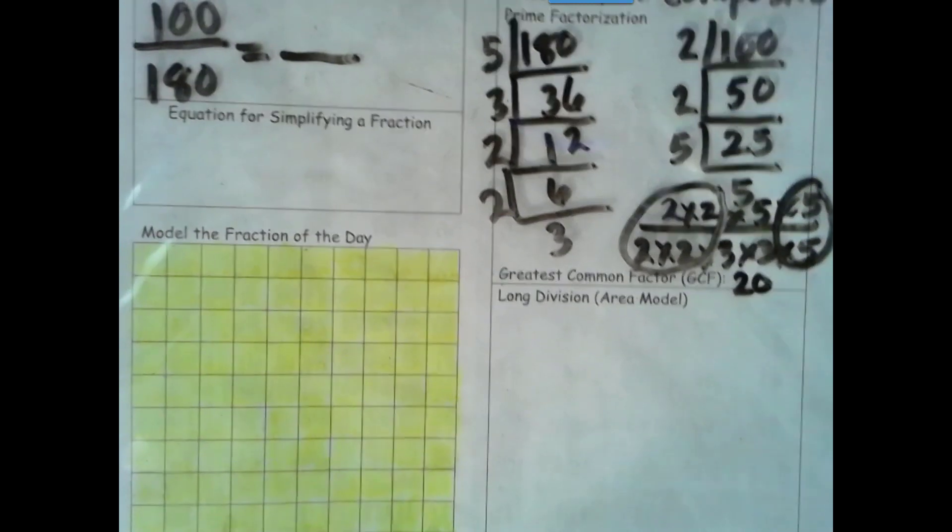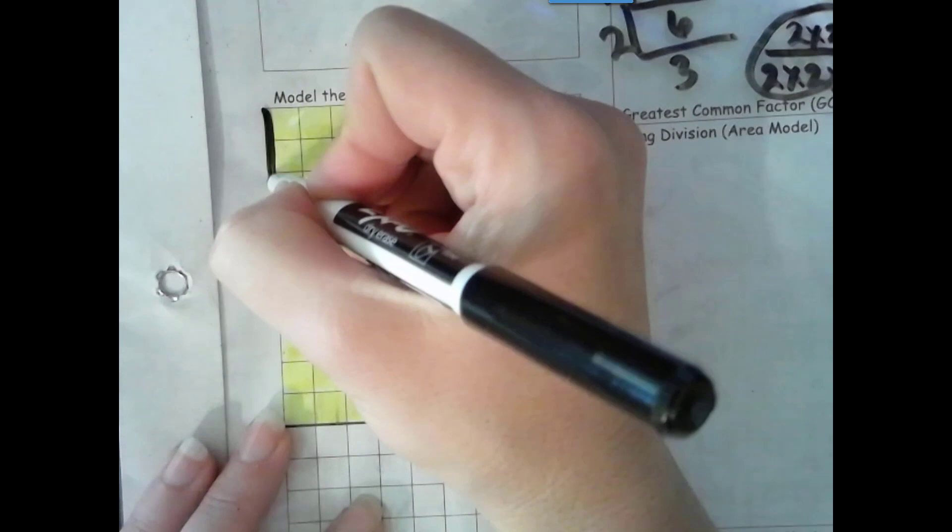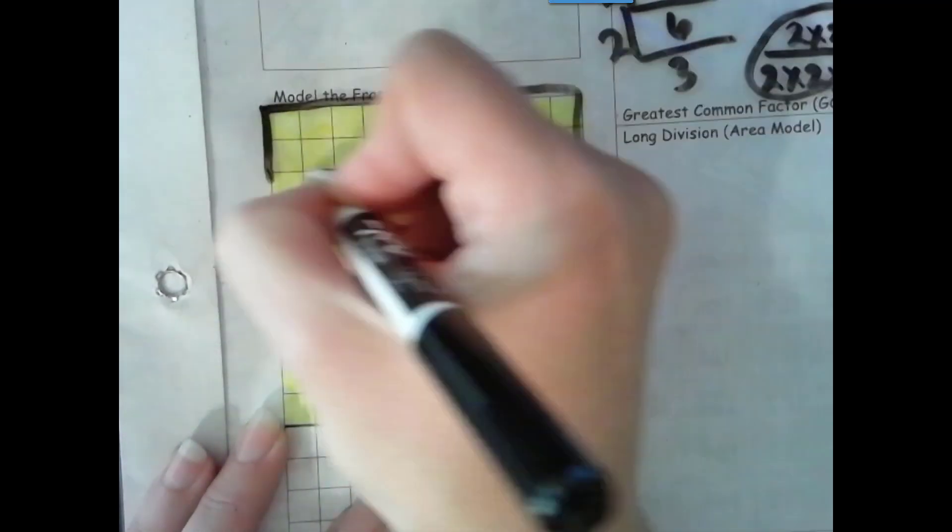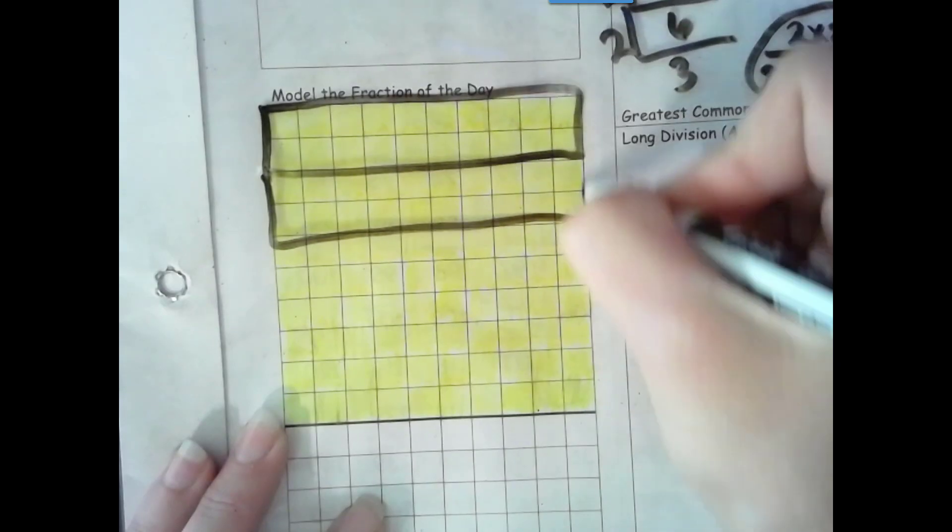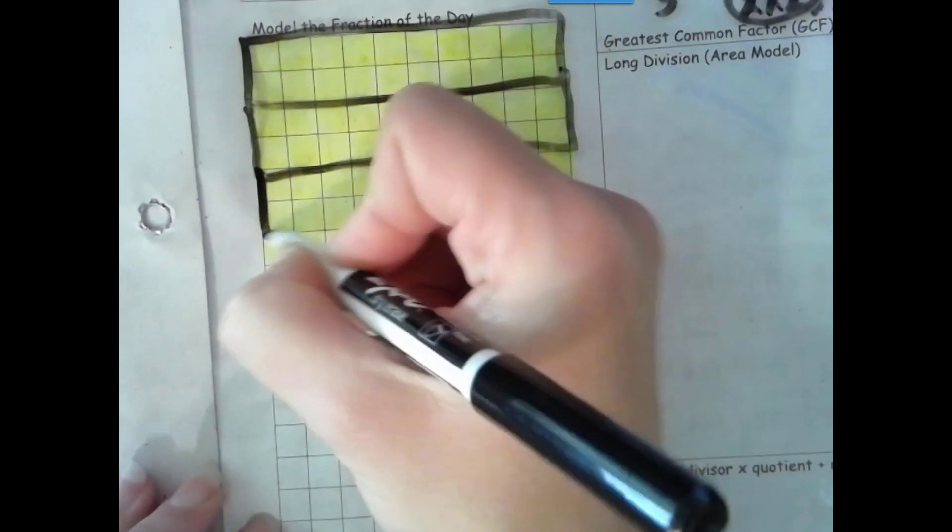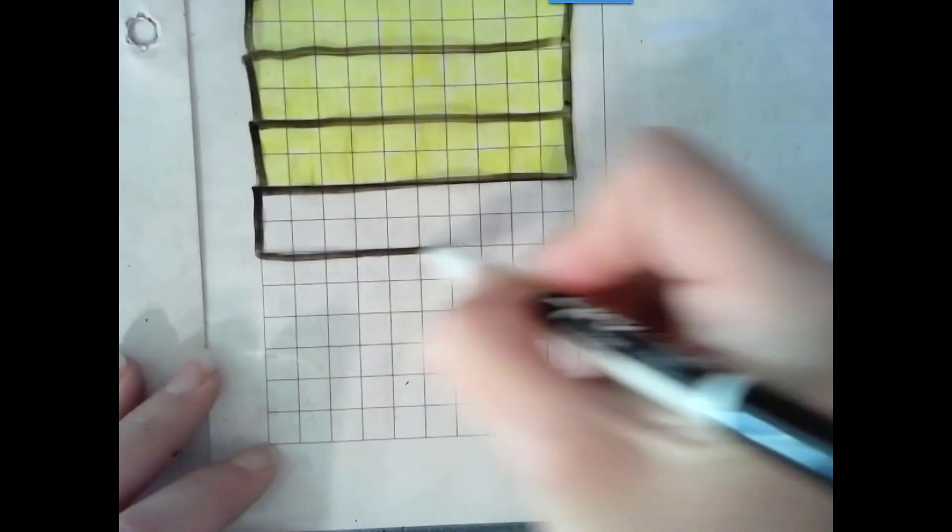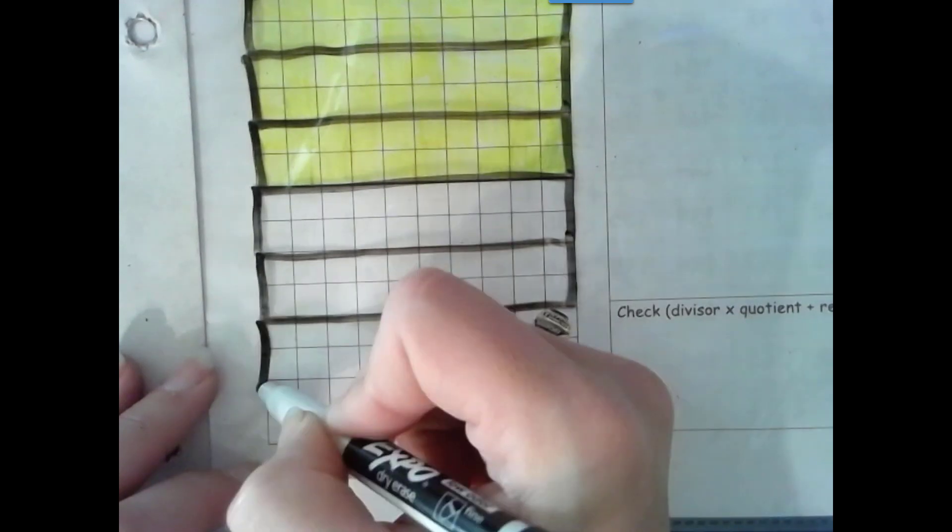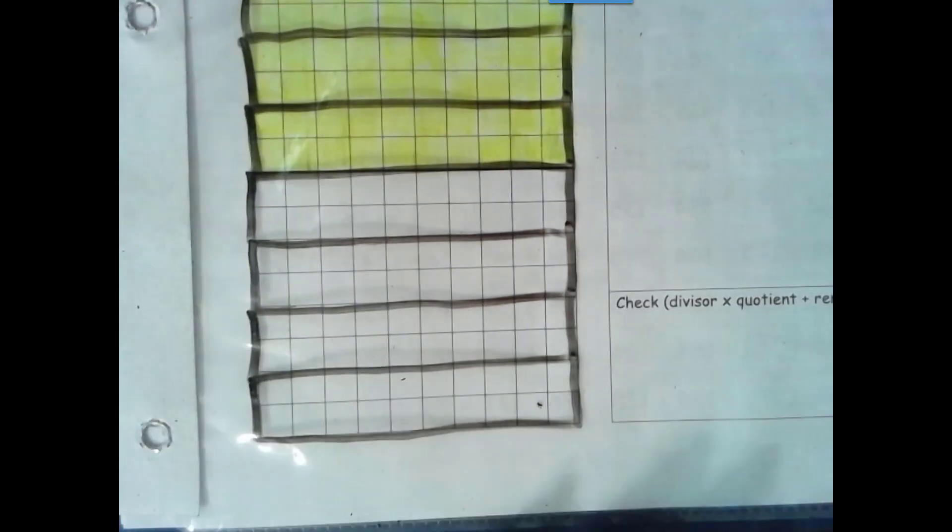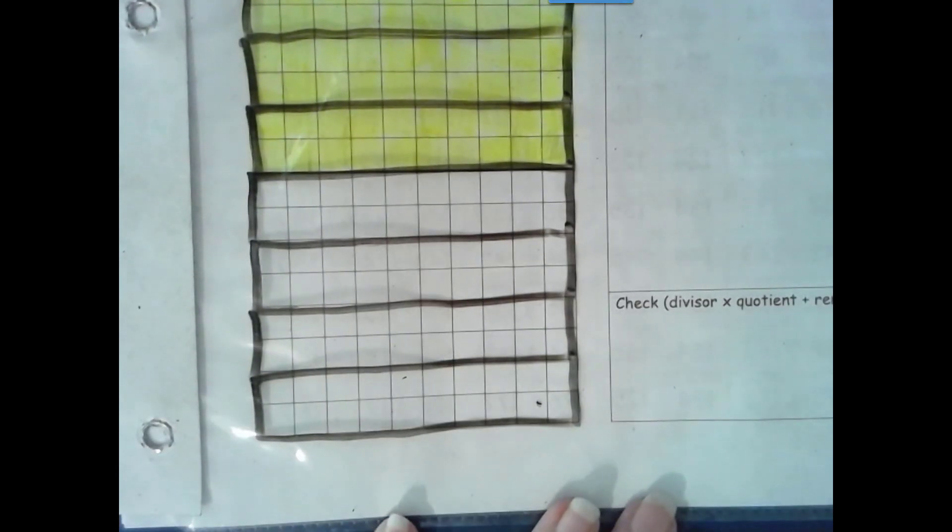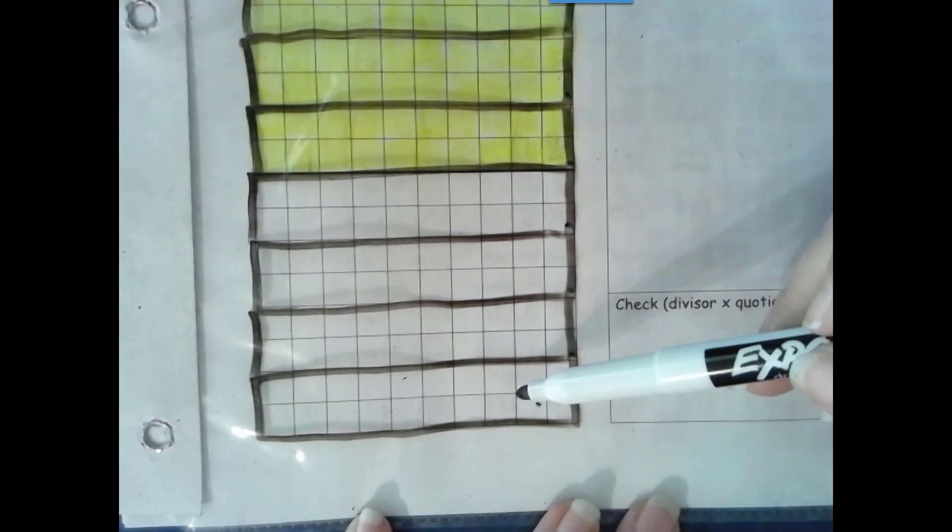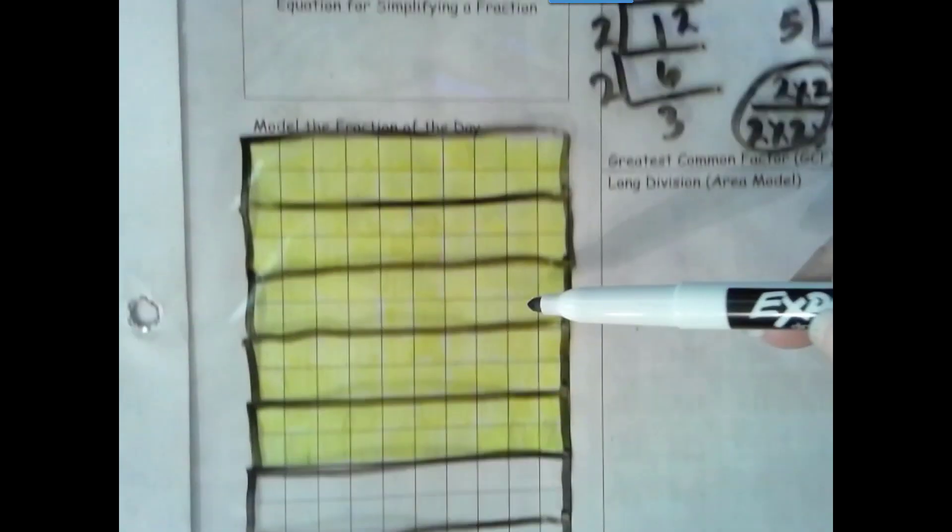So let's go ahead and make our groups of 20. Your groups of 20 do not have to look like mine, but make sure you keep your shaded separated from your unshaded. And you definitely have 20 in each. Okay, so let's see how many total groups of 20 we have. 1, 2, 3, 4, 5, 6, 7, 8, 9.